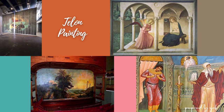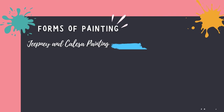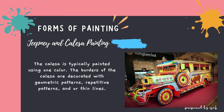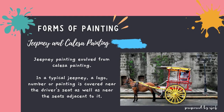Jipmi and Kallasa painting. The Kallasa is typically painted using one color. The borders of the Kallasa are decorated with geometric patterns, repetitive patterns, and/or thin lines. Jipmi painting evolved from Kallasa painting. In a typical Jipmi, a logo, number, or painting is placed near the driver's seat as well as near the seats adjacent to it.